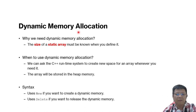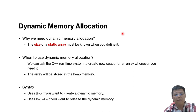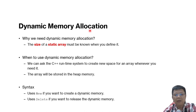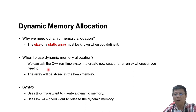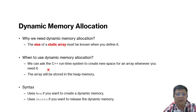Now we go for the last part: dynamic memory allocations. In some cases when we create a program, we do not know the size of the array. So in order to solve this problem, we cannot avoid dynamic memory allocations — we must use it. We can ask the C++ runtime system to create a new space for the array whenever we need it, even after the exe file is ready.